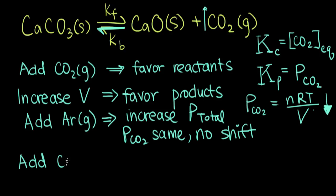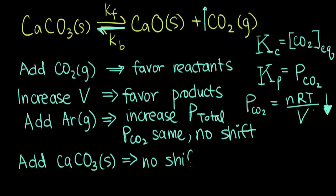What happens when we add more calcium carbonate? That's our starting material and it is a solid. Our equilibrium expressions are determined by our CO₂ concentration. Adding more calcium carbonate, which is a solid, isn't actually going to perturb our reaction from equilibrium. Our reaction is still going to be at equilibrium, and we will get no shift in concentrations.